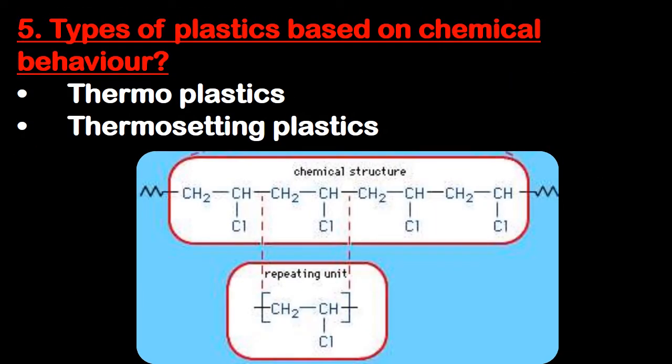Question number five: types of plastic based on chemical behavior. First is thermoplastic, second is thermosetting plastic.